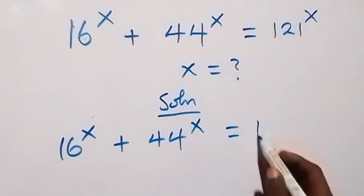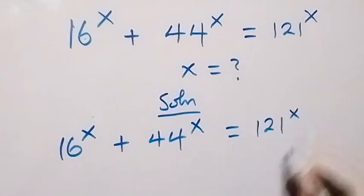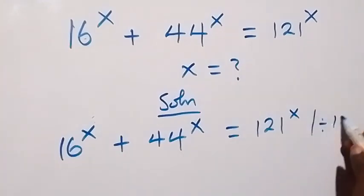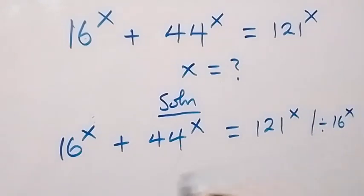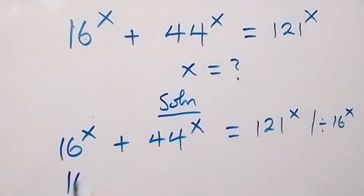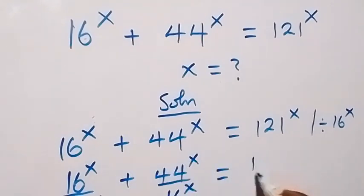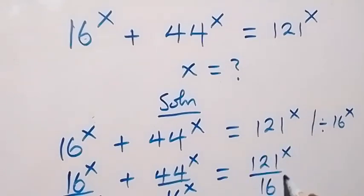Here, let's divide through by 16 raised to the power x. This becomes 16^x over 16^x, then plus 44^x over 16^x, equals to 121^x over 16^x.